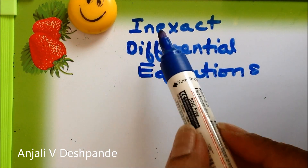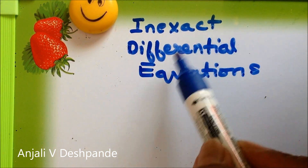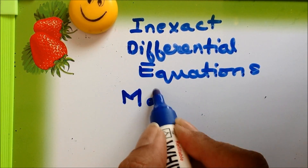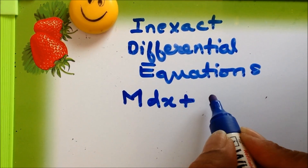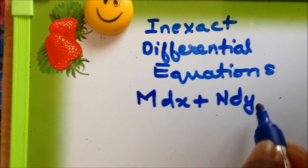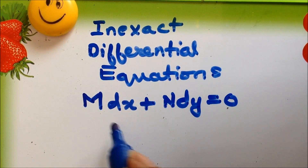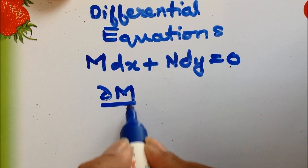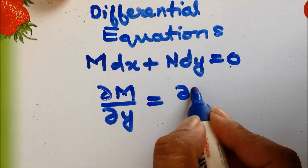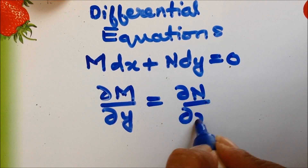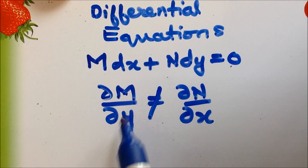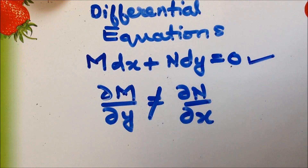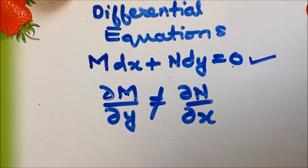In today's video, I am going to tell you about the inexact differential equations. If we are given the equation M dx plus N dy is equal to 0, and if the condition ∂M/∂y equals ∂N/∂x is not satisfied — that means ∂M/∂y is not equal to ∂N/∂x — then this equation is said to be an inexact or non-exact differential equation.